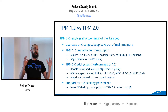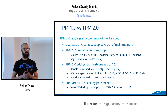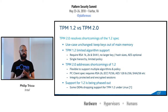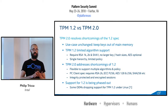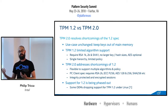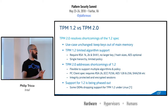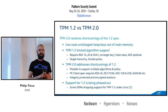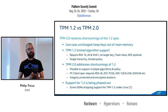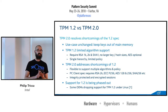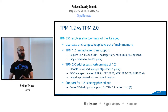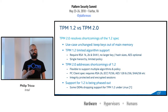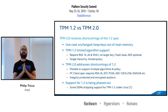In TPM 2.0, a lot of these things were addressed. Algorithm agility, as they call it in the spec, is the really important part — it can support any number of algorithms. There's a set of required algorithms, but it can be expanded to support things specific to individual countries, such as the SMX algorithms used by some Chinese manufacturers. The ECC algorithms are really important for something with such a small amount of memory, since having smaller keys is a very good thing.